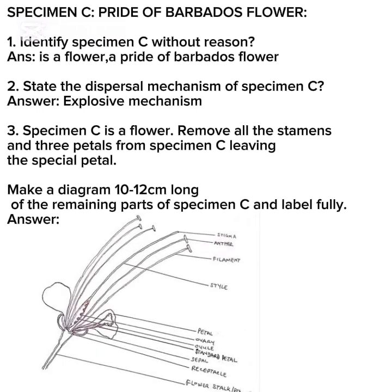Specimen C is the Pride of Barbados flower. You may be asked the following questions. Number one: identify Specimen C without reason — answer is a flower, a Pride of Barbados flower. Number two: state the dispersal mechanism of Specimen C — answer is explosive mechanism.